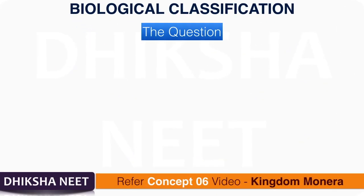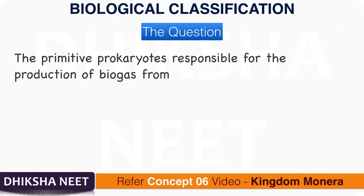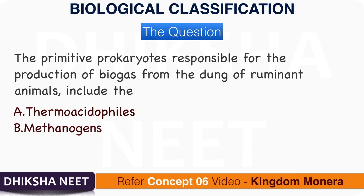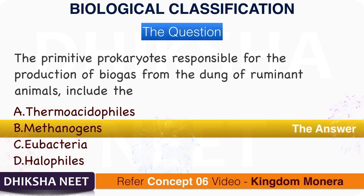Question 3: The primitive prokaryotes responsible for the production of biogas from the dung of ruminant animals include the: A. Thermoacidophiles. B. Methanogens. C. Eubacteria. D. Halophiles. The answer is option B, Methanogens.